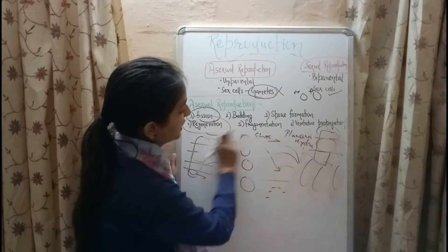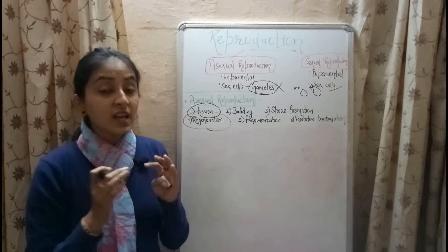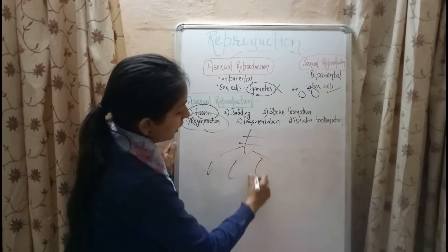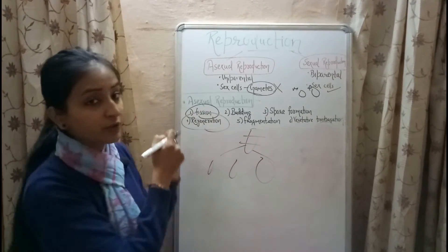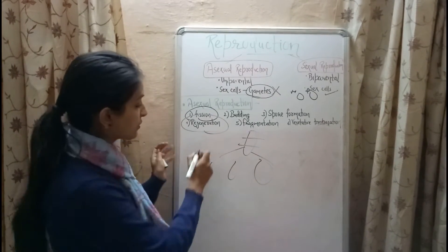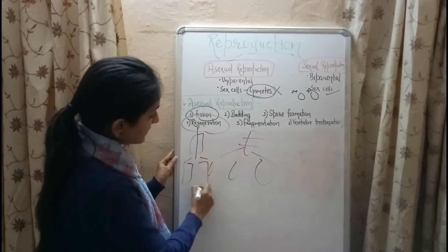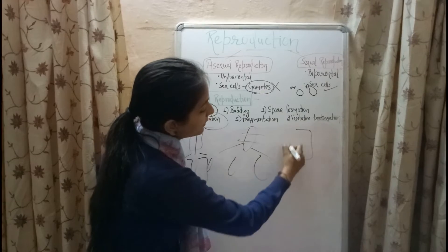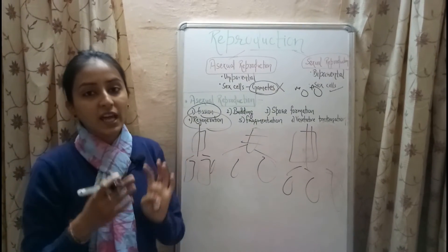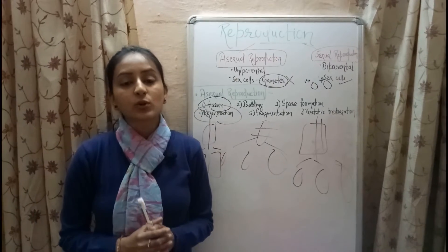The next process is fragmentation. Fragmentation is the process by which the body of a multicellular organism splits into two or more parts and then produces new organisms. Fragmentation is similar to fission, but the key difference is that fission occurs in unicellular organisms whereas fragmentation occurs in multicellular organisms like sea anemones and spirogyra.